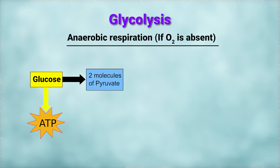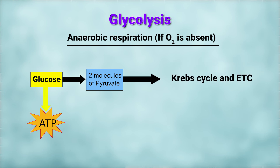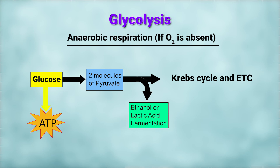If oxygen is absent, that is in the case of anaerobic respiration, the two other stages — the Krebs cycle and electron transport chain — are bypassed. Pyruvate is converted into different byproducts through fermentation and carbon dioxide is released. A lesser amount of energy is released in the form of ATP.